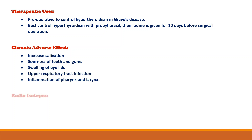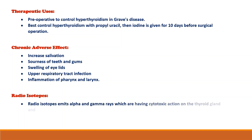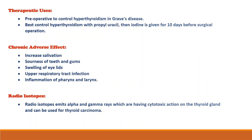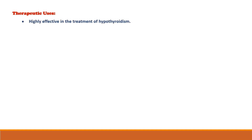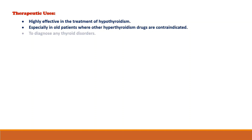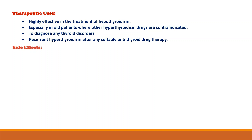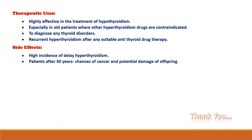The next category is radioisotopes. Radioisotopes emit alpha and gamma rays which have cytotoxic action on the thyroid gland and can be used for thyroid carcinoma. These are highly effective in the treatment of hyperthyroidism, especially in older patients where other hyperthyroid drugs are contraindicated. These are also used to diagnose thyroid disorders. Side effects include a high incidence of delayed hypothyroidism, increased chances of cancer in patients under 30 years, and potential damage to offspring.